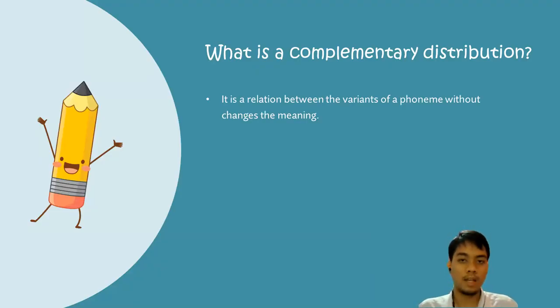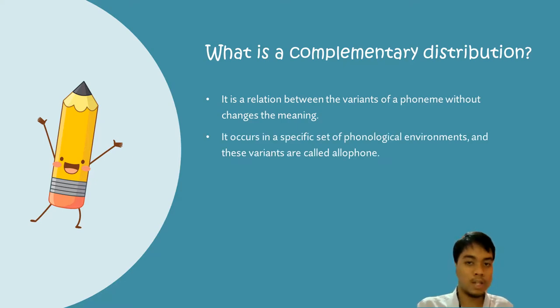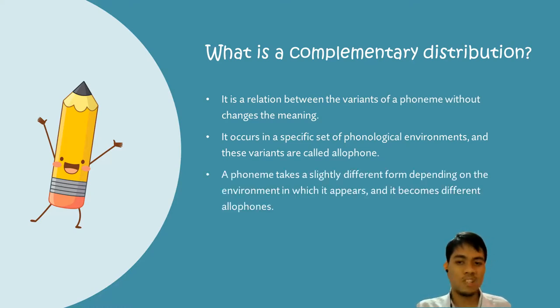Let's move to another thing. What is a complementary distribution? Complementary distribution is a relation between the variants of a phoneme without changes to the meaning. It occurs in a specific set of phonological environments, and these variants are called allophones. A phoneme takes a slightly different form depending on the environment in which it appears, and it becomes different allophones.